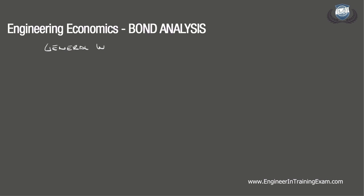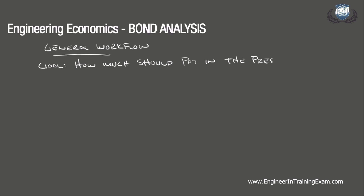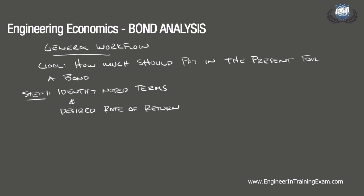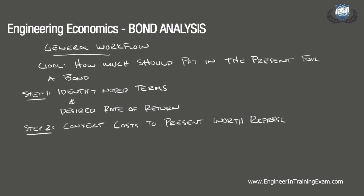So let's run through a general workflow. The goal of bond problems is typically to determine how much an entity should pay in the present for a bond with specific terms and with consideration of any other economic desires. The first step is to identify the noted terms of the bond and the desired rate of return for the entity analyzing that bond. These variables will drive our analysis. Next, we consider the uniform costs and benefits for the specific bond along with the entity's desired rate of return and convert all costs into an acceptable present worth representing what the entity should pay now to fulfill their desires.